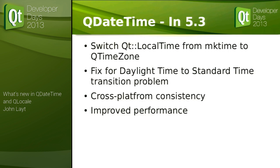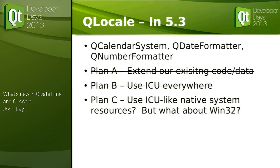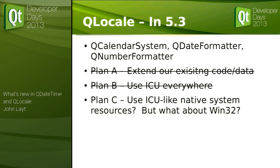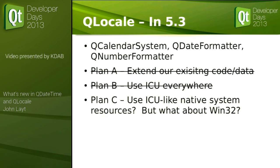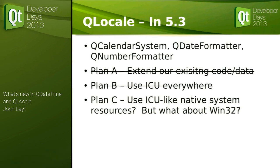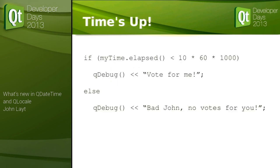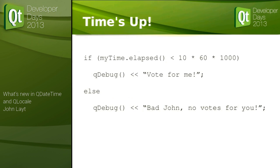For QDateTime in 5.3, we're going to fix a lot of inconsistent behavior across platforms. Currently we use the C standard mktime() which performs differently on every platform and has serious bugs on Linux, so we're going to switch our backend to use QTimeZone instead — it will be faster and consistent across all platforms. For QLocale, we've been through three plans: Plan A was to extend existing code and data but that would have exploded the library size; Plan B was to use ICU everywhere, but we can't do that on iOS and Windows developers don't want to ship an extra 10MB of libraries; Plan C is to use entirely native resources.